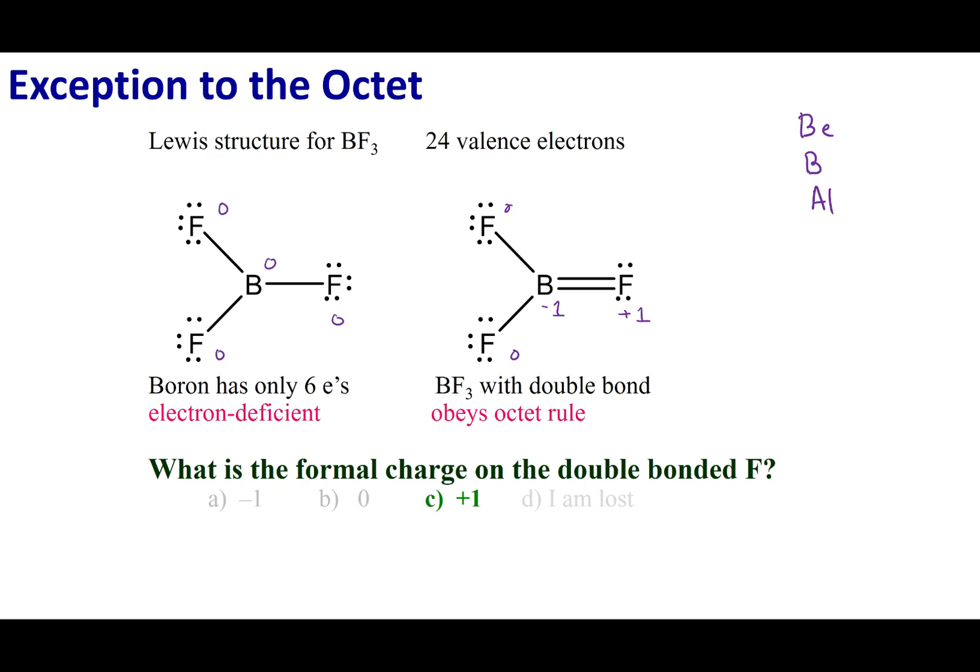You already know that hydrogen is considered electron deficient—it only wants two electrons around it. Now we're saying that these elements don't necessarily need to complete their octet. These elements sometimes will have six or four electrons around it and will be completely satisfied.